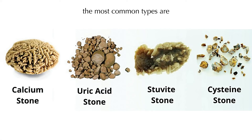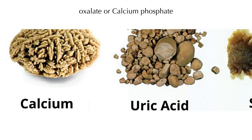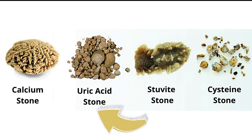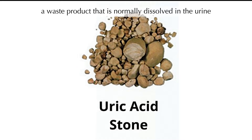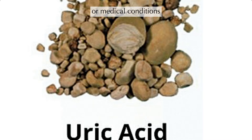Calcium stones are the most common type of kidney stones. They are usually made of calcium oxalate or calcium phosphate. They can form when there is too much calcium or oxalate in the urine, or when the urine is too acidic. Uric acid stones are more common in men than in women. They are usually made of uric acid, a waste product normally dissolved in the urine. They can form when the urine is too acidic, or when there is too much uric acid in the body due to certain foods, medications, or medical conditions.